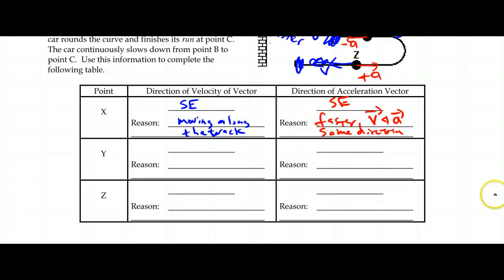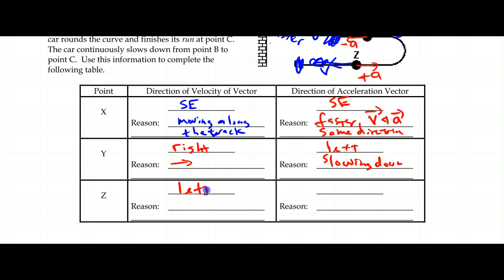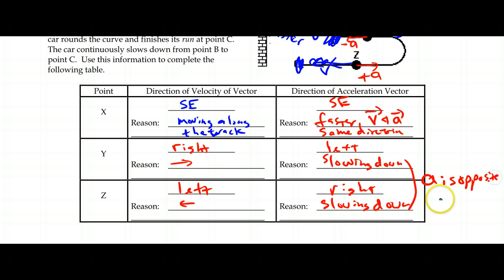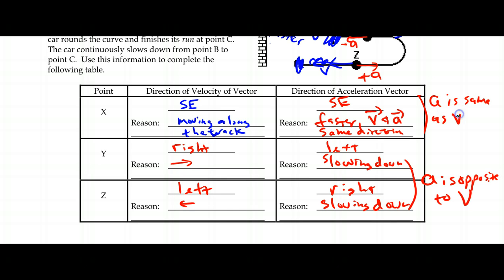It is how the acceleration vector's direction is related to the velocity vector. Anytime they're opposites, we're going to slow down. Anytime they're the same, we're going to speed up. Moving to the right along the track, the acceleration has to be to the left because we're slowing down — that acceleration has to be opposite. At point Z, moving to the left, the acceleration has to be to the right because we're still slowing down. Any time we slow down, A is opposite in direction to the velocity vector. To speed up, they must be the same — up here we got faster, so A is the same as the velocity vector's direction.